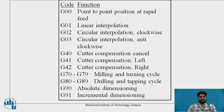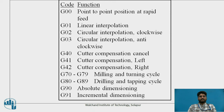The G addresses are as follows: G00 — point-to-point positioning at rapid feed. G01 — linear interpolation. G02 — circular interpolation clockwise. G03 — circular interpolation anticlockwise. G40 — cutter compensation cancel. G41 — cutter compensation left. G42 — cutter compensation right. G70 to G79 — milling and turning operations. G80 to G89 — drilling and tapping cycle operations. G90 — absolute dimensions. G91 — incremental dimensions. These are the basic and main addresses used in the CNC part program.